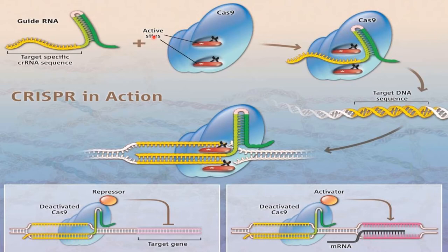The Cas9 nuclease has two active sites. To form the CRISPR system, these two components combine, where one of the active sites of Cas9 will be bound with the target-specific CRISPR RNA sequence.